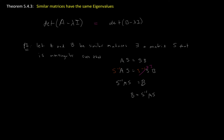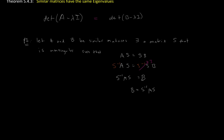Our goal is to show that the characteristic polynomial of A is equal to the characteristic polynomial of B, and that shows they have the same eigenvalues. We start by looking at B minus lambda I. That is the same as — substituting in B — S inverse times A times S minus lambda I. All I did was substitute the matrix B.